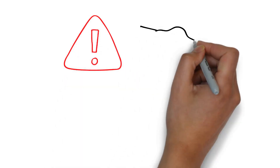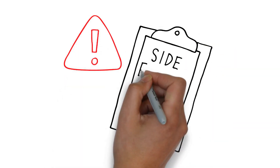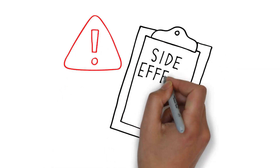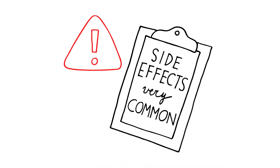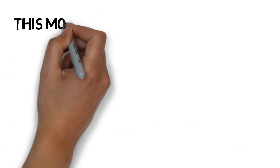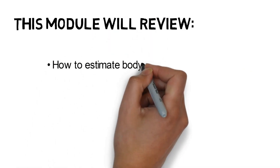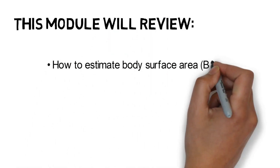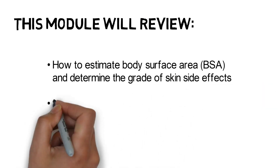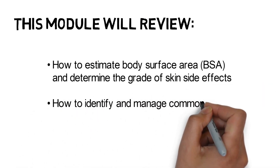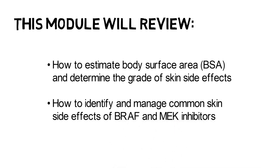Side effects are very common. In fact, some studies show up to 100% of patients on targeted therapies have changes in the skin. In this module, we will review how to estimate body surface area and determine the grade of skin side effects, as well as how to identify and manage common skin side effects of BRAF and MEK inhibitors.